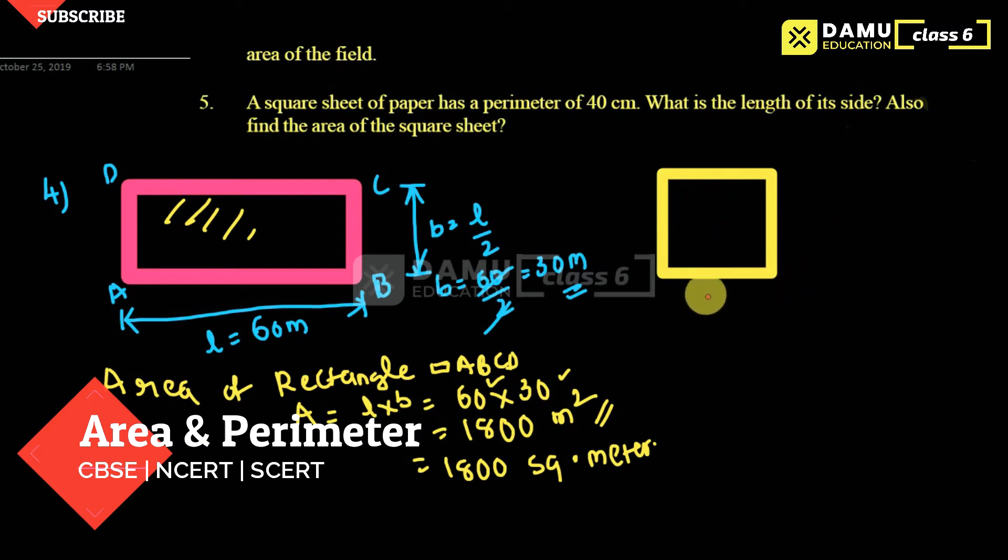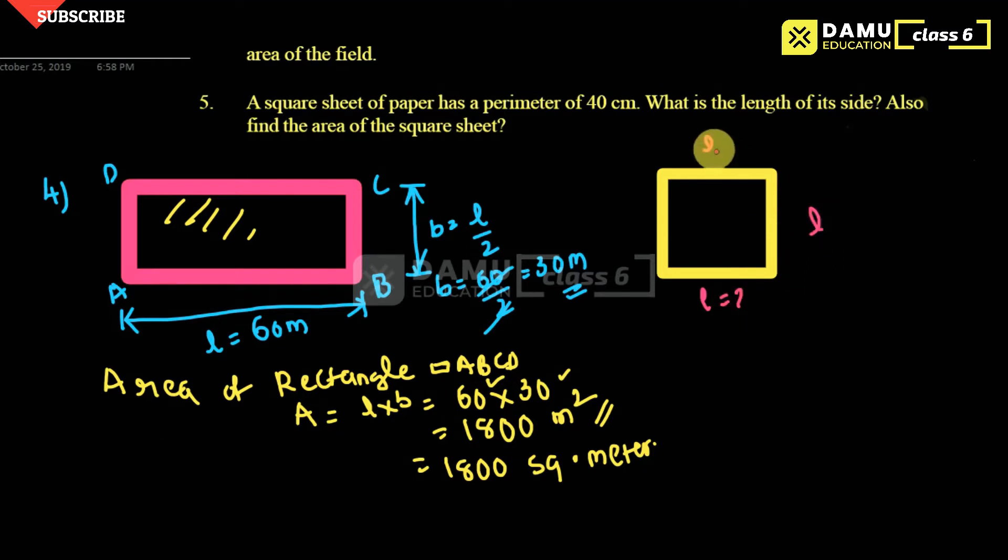So we have to find the length. Let's take square ABCD. Because in a square, all sides are equal. All sides are equal.